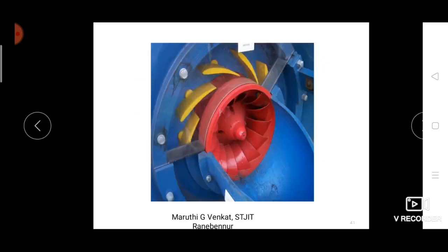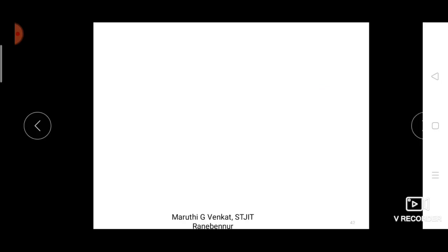The kinetic energy is absorbed by the runner blade, which makes a rotational motion, generating mechanical energy. The resulting low pressure water is then discharged to the tail race using the draft tube. These are the guide blades and runner blades as seen in the Francis turbine.